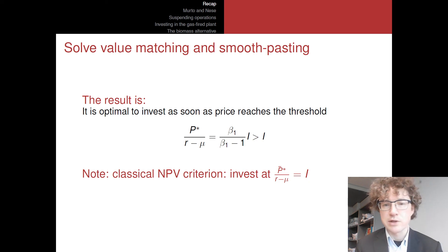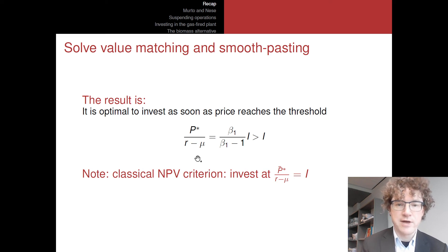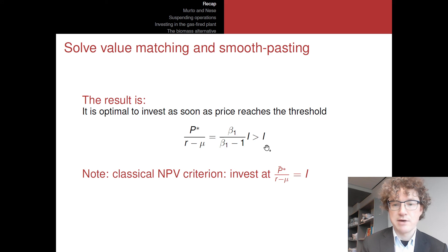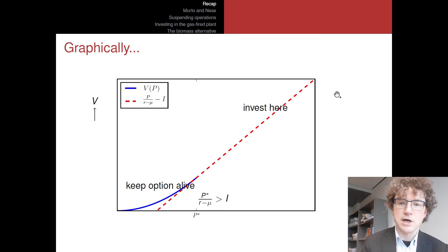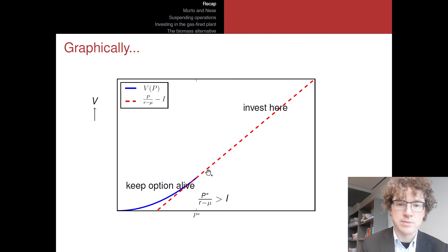Combining these two conditions, p* satisfies a specific equation. The key insight is that the value of the growing perpetuity at the threshold must be larger than the investment cost I alone — so we invest later than the naive NPV rule suggests. This is visible in the picture: the blue option-value line lies above the NPV dashed line in the waiting region, and they match up smoothly at p*, which is the point at which we make the investment.